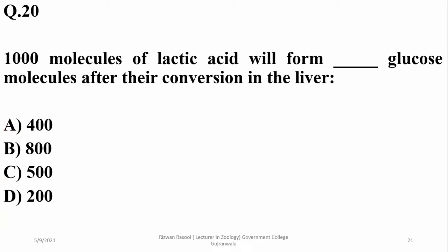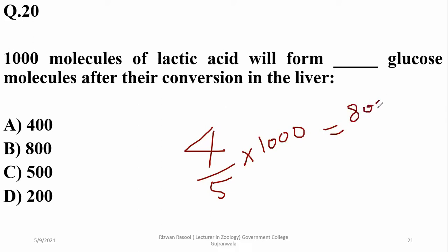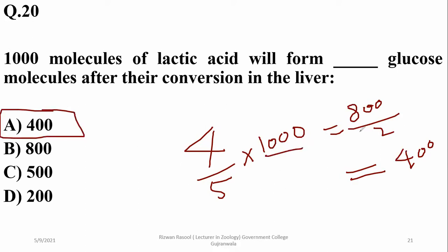If 1000 molecules of lactic acid are converted in the liver, four out of five lactic acid molecules are converted to form glucose. So four-fifths multiplied by 1000 gives 800. You then divide by two because two lactic acid molecules are required to form a single glucose molecule, giving 400. One out of five lactic acid is converted into energy for these conversions. The right option is alpha — 400.